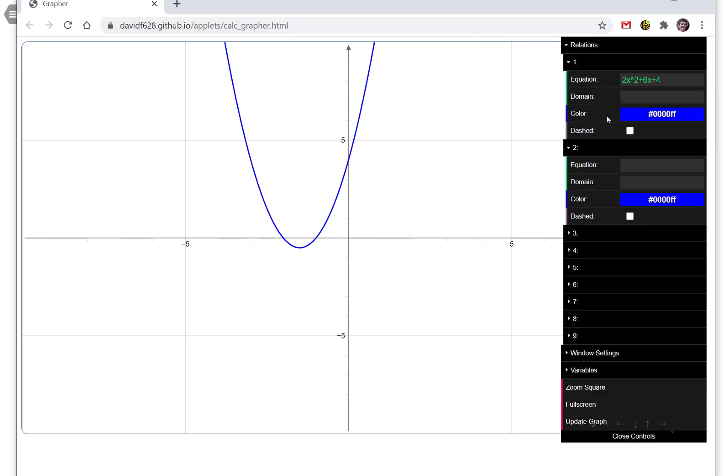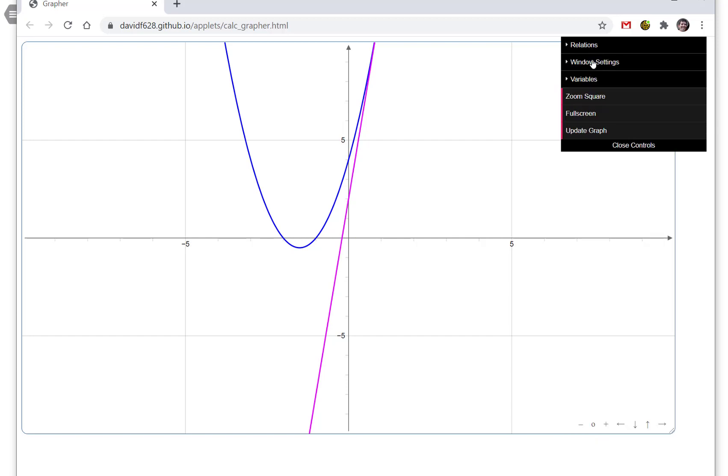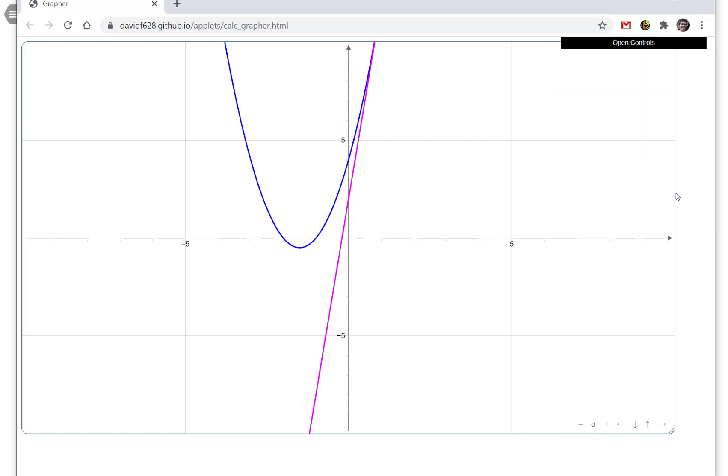What I'm going to do next is graph the derivative. So we said the derivative was 10x plus 2. Alright, if I graph that then there's my derivative and tell you what, let me go ahead and change the color of that derivative just so we make sure we know which is which. Perfect. Alright, so let's close that.